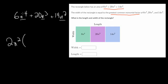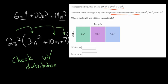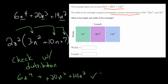Dividing through by 2n²: 6 divided by 2 is 3, and n⁴ divided by n² leaves n². Then 20 divided by 2 is 10, and n³ divided by n² leaves n. And 14 divided by 2 is 7, with no n's remaining. So we get 2n²(3n² + 10n + 7). Checking with distribution: 2n² × 3n² = 6n⁴, 2n² × 10n = 20n³, and 2n² × 7 = 14n². That's exactly what we started with.